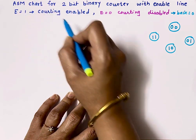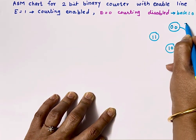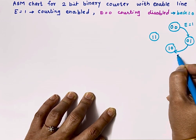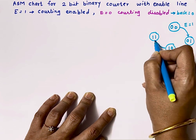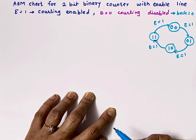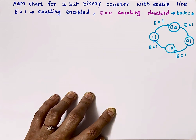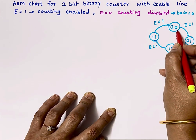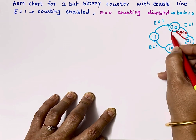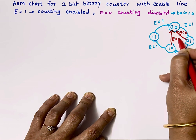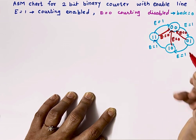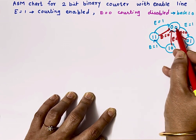If E equals 1, counting is enabled, so it goes from 00 to 01, then from 01 to 10, then from 10 to 11, and from 11 back to 00 — all when E equals 1. But if E equals 0 from any state, it will go directly back to state 00. So from every state, if enable is 0, it will go back to state 00.